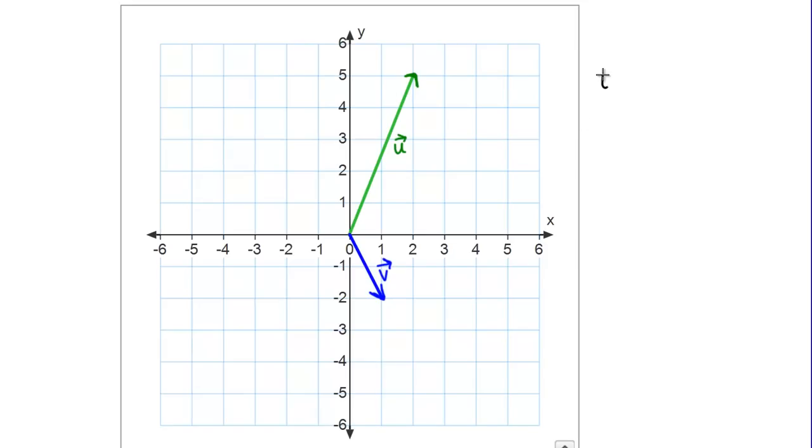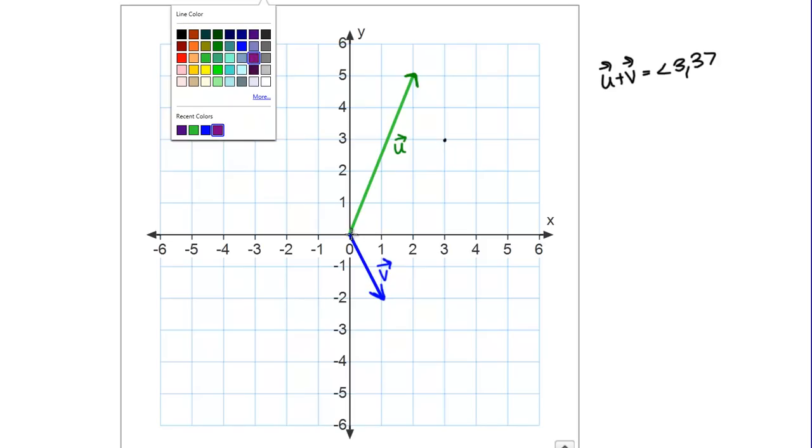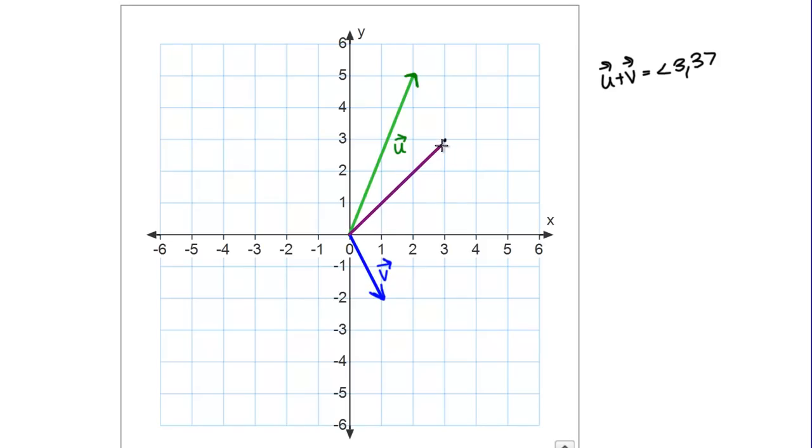We just calculated that U plus V, the vector, should be the position vector 3, 3. Let's just draw that in and see if that agrees with maybe what we would get if we use something like the parallelogram rule. I should be going to the point 3, 3 here. Let's sketch that in.